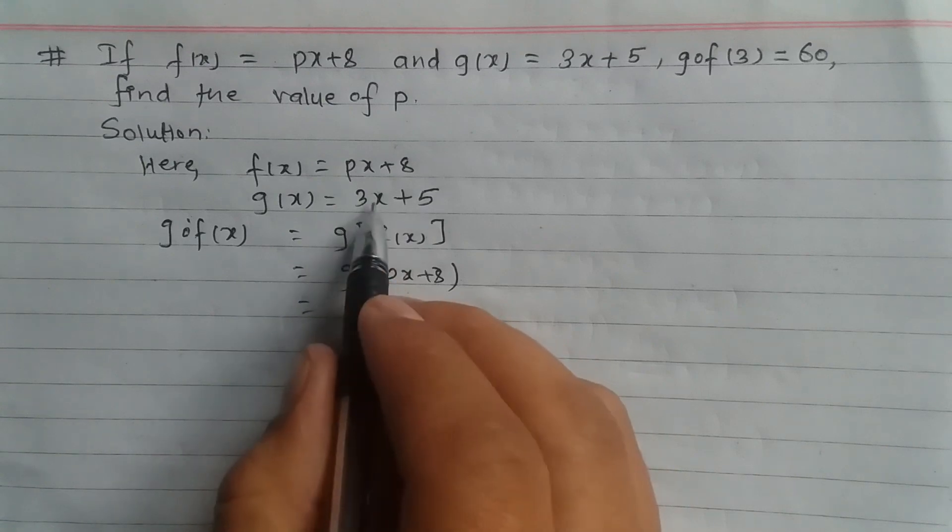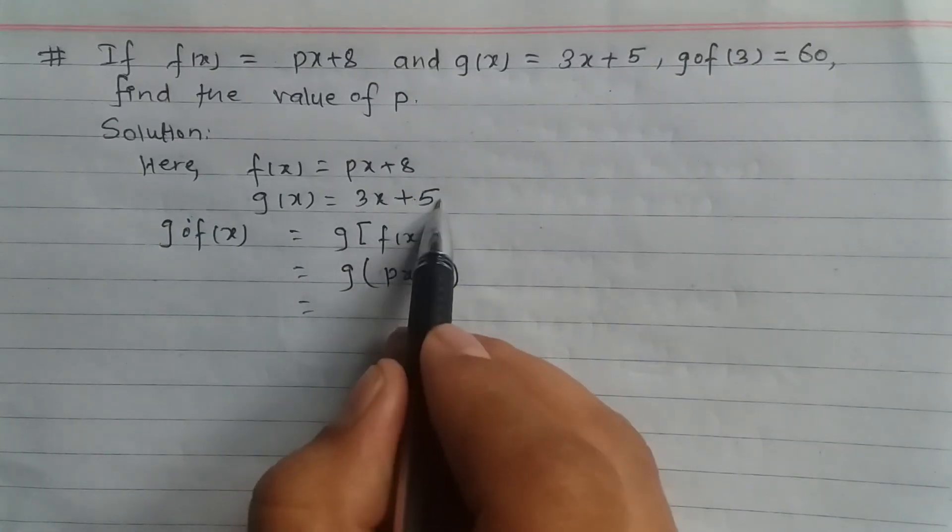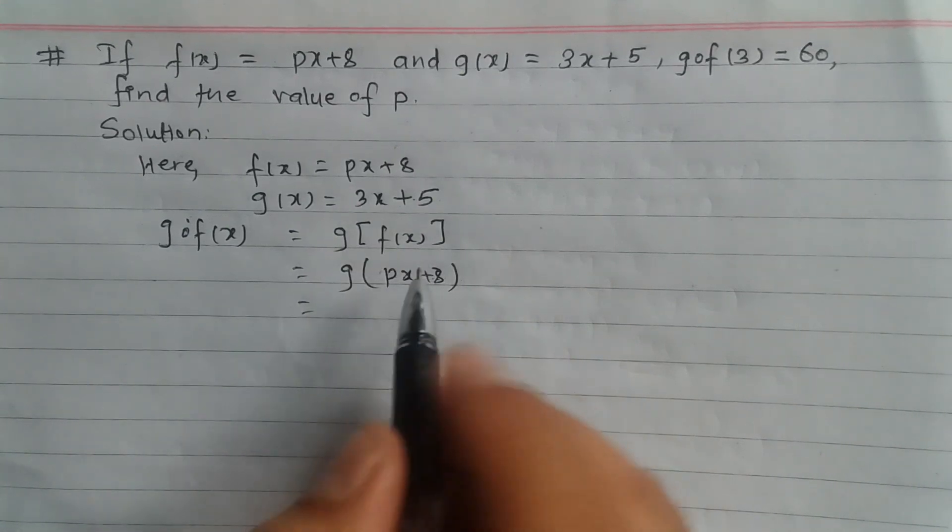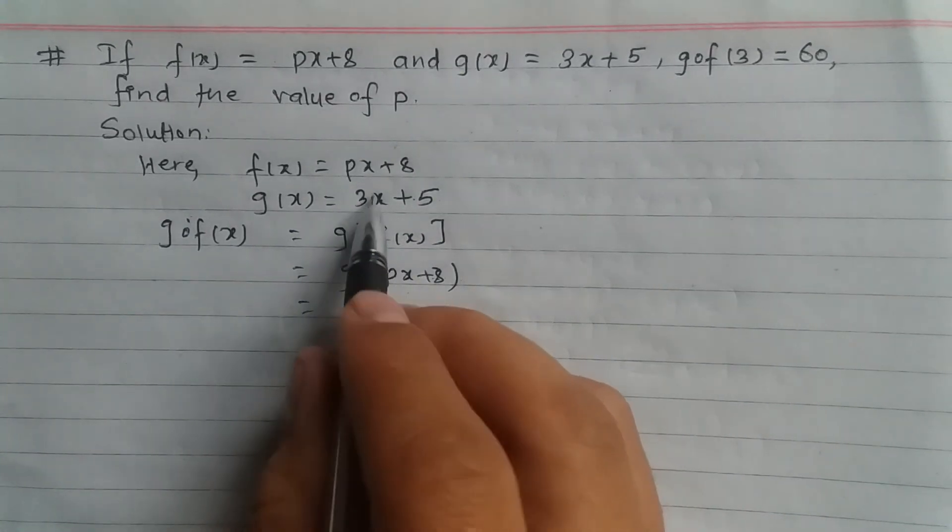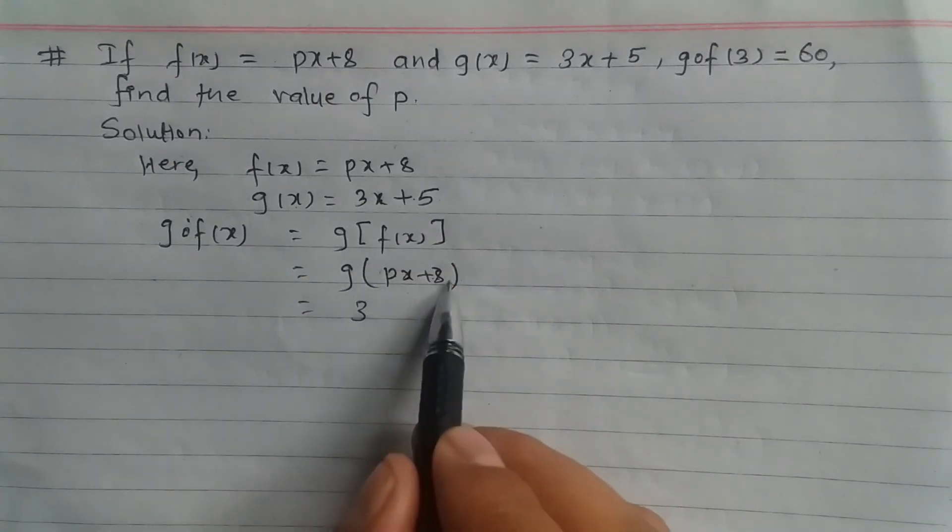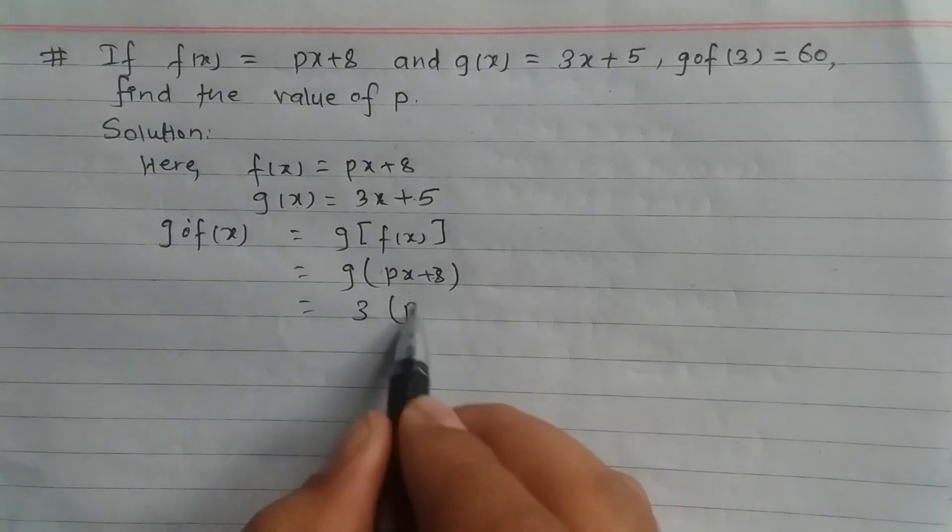Since g(x) = 3x + 5, we have g(px + 8). We replace the x term in g(x) with px + 8, giving us 3(px + 8) + 5.